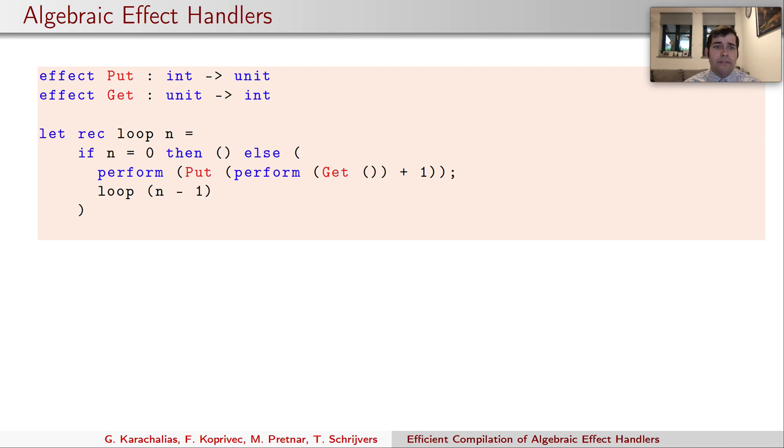We then define a simple recursive function loop that either returns a unit or performs two effects. It firstly performs get effect, increments the result and then performs the put effect with the resulting number as an argument. The unit result is ignored and the function recursively calls itself.